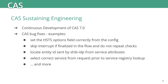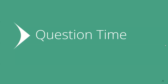Some bug fixes that landed in upstream CAS include: correctly setting HSTS options from config, skipping authentication interrupts if finalized in the flow so they do not repeat checks, correctly locating the entity ID sent by a Shibboleth IDP from service attributes when a Shib IDP integration is in place, and selecting the correct service from requests prior to service registry lookup, among many more. That concludes the brief CAS update.